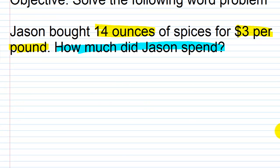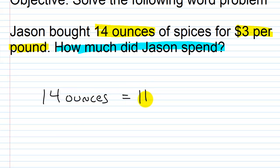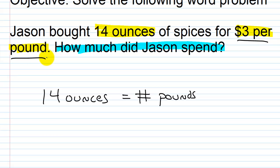We need to figure out: if Jason bought 14 ounces, that equals how many pounds? That's what we need to know, because we're given the cost in price per pound — $3 per pound. Once we figure out how many pounds we have, we just multiply that amount by three. 16 ounces equals one pound.